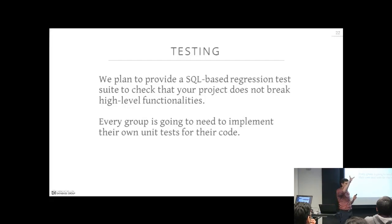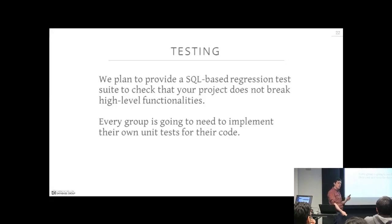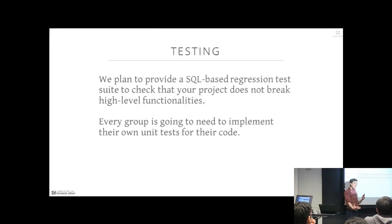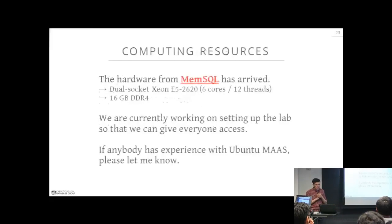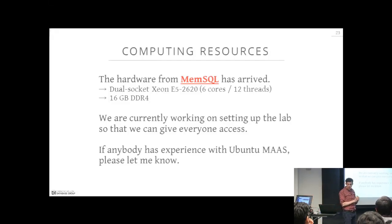We also have a build and test server here at CMU that every group will have access to. You'll tell me what the main repository is for your implementation, and we'll set it up so that anytime somebody pushes code to GitHub, our system will pull down the changes, compile it, run all the tests, and give you back a notification when someone breaks the build. This is called continuous integration. We use something called Jenkins, and we'll set that up for everyone here so as you go along and push changes, you make sure you're not breaking things.